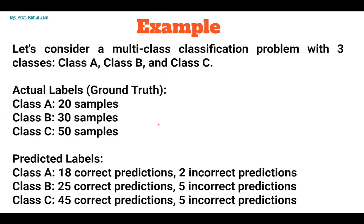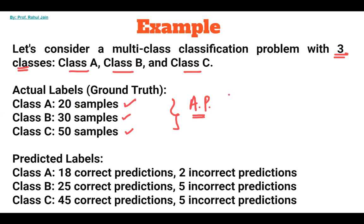Let's figure out these concepts with the help of an example. Consider a multi-class classification problem with three classes: class A, class B, and class C. The actual labels — that is the ground truth — are: class A has 20 samples, class B has 30 samples, and class C has 50 samples. These are the actual positives, also called true positives, which is the ground truth.